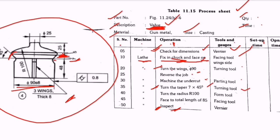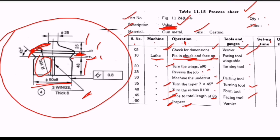Next, turn the radius of 100 — this is the 100 radius. Then face to a total length of 85: that is 48 + 7 + 5 + 25 = 85, so face to 85 total length with the facing tool. Finally, inspect the element — after all the operations, the final step is inspection.